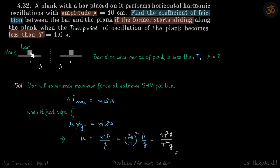We have a plank on which we have kept a bar, and this plank is doing SHM with amplitude A. If you are doing this SHM very slowly, the bar will not slip, but if you are doing it fast, the bar will slip at the end. So the less the time period, the more the chances for the bar to slip.